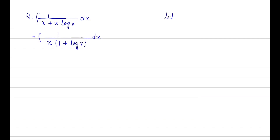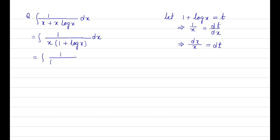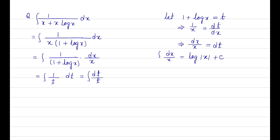Let us assume that 1 + log x = t. Taking the derivative with respect to x on both sides, we get 1/x = dt/dx, so dx/x = dt. The integral becomes: integration of 1/(1 + log x) · dx/x, which equals integration of (1/t) dt, or integration of dt/t.